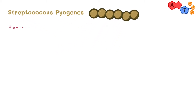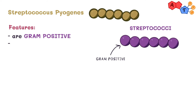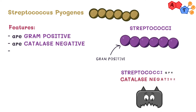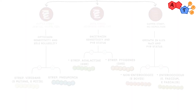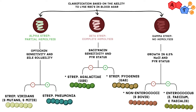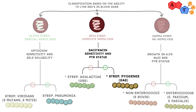Now let's talk about the features of Streptococcus pyogenes. If you remember from our last video, we said that Streptococci in general are gram-positive, catalase-negative, and arranged in chains. Here is the full classification of Streptococci, and this is where pyogenes fits.